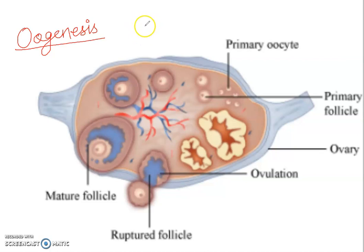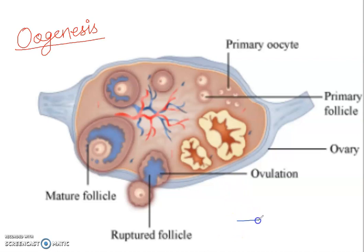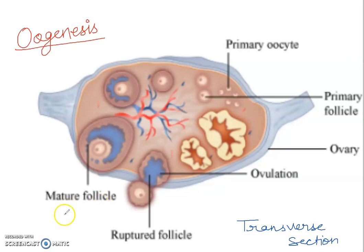Oogenesis is the development of ova which occurs in the ovary. Here you can see the picture of the ovary, which is the transverse section, or you can say TS. This is the transverse section, and this structure tells you about the structure of the ovary.